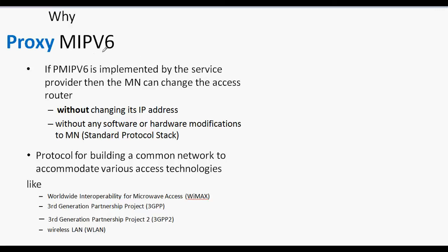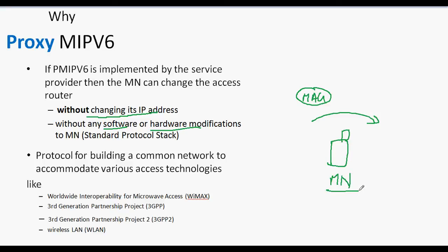The advantages of Proxy Mobile IPv6 include: if implemented by the service provider, the mobile node can change access routers without changing its IP address, and without any software or hardware modifications to the protocol stack of the mobile node — making the mobile node completely independent of any changes in the network infrastructure. Additionally, this protocol allows building a common network to accommodate various access technologies such as WiMAX, 3GPP, 3GPP2, or wireless LAN.